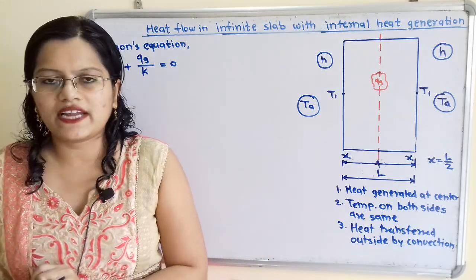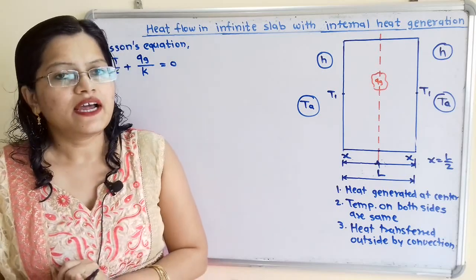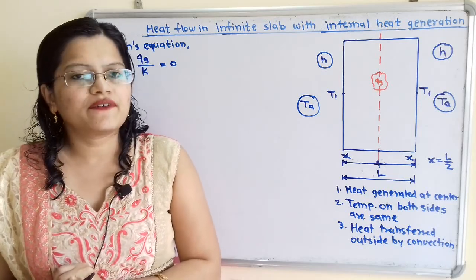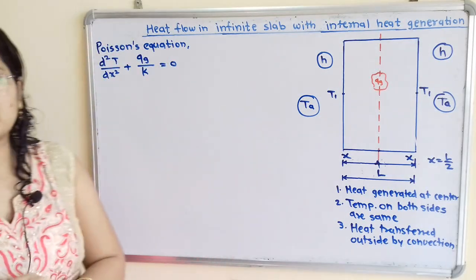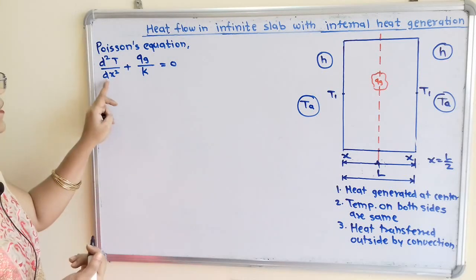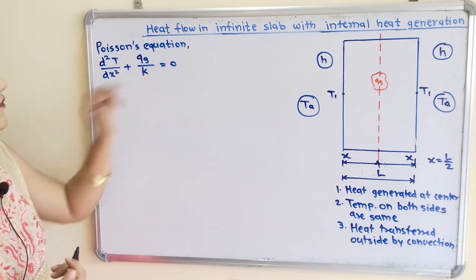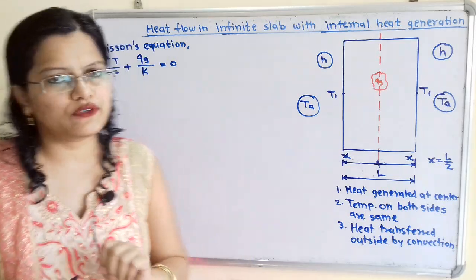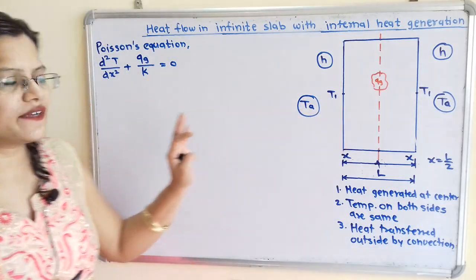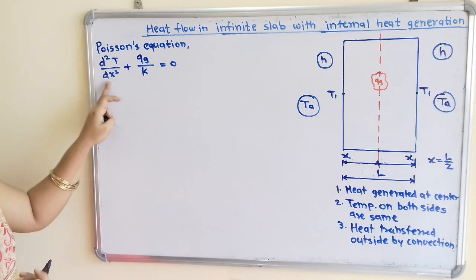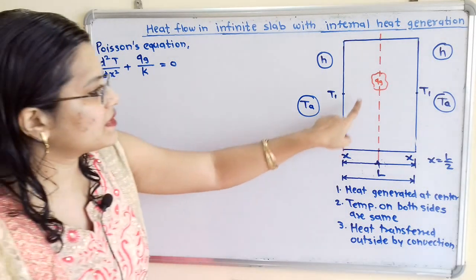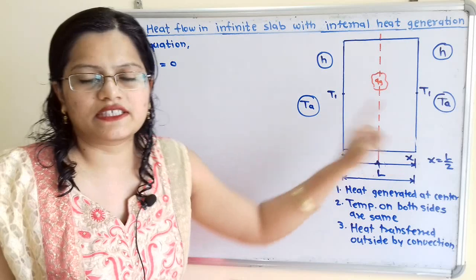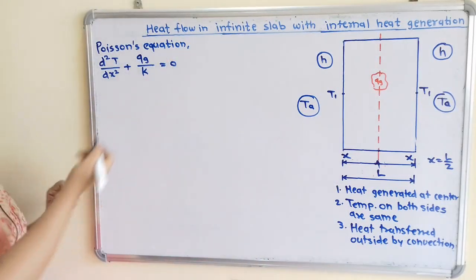Now we find the equation for temperature distribution. We refer to Poisson's equation: d²T/dx² + QG/K = 0, where QG is the heat generated per unit volume per unit time, and K is the thermal conductivity. The term d²T/dx² represents the relationship between temperature and direction X, the direction in which heat is flowing.